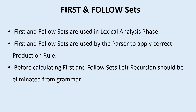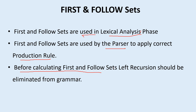First, let us know the importance of why we are finding the first and follow sets and where they will be used. The first and follow sets are used by the parser to apply the correct production rule. Before calculating the first and follow set, make sure that the grammar doesn't have left recursion. If there is any left recursion in the grammar, first we need to remove it and then calculate the first and follow set.